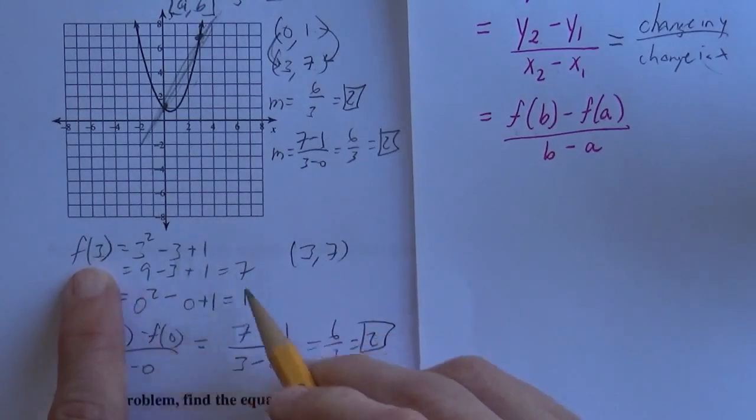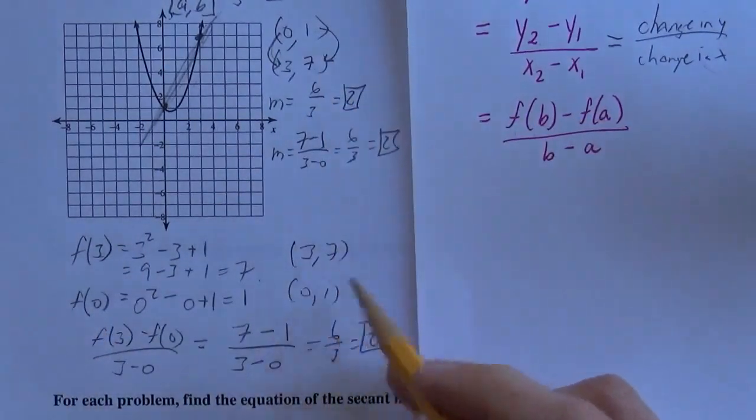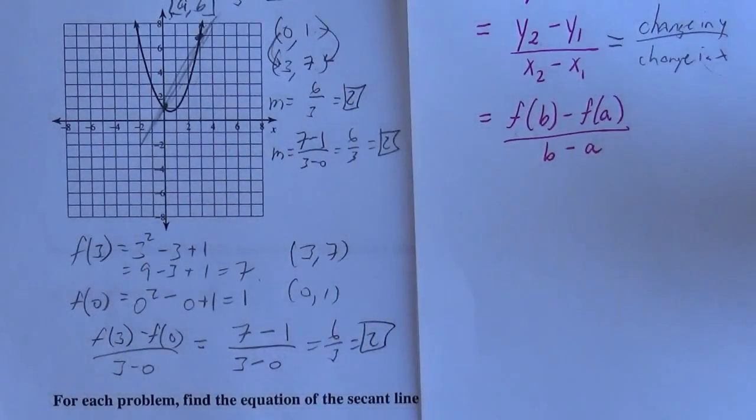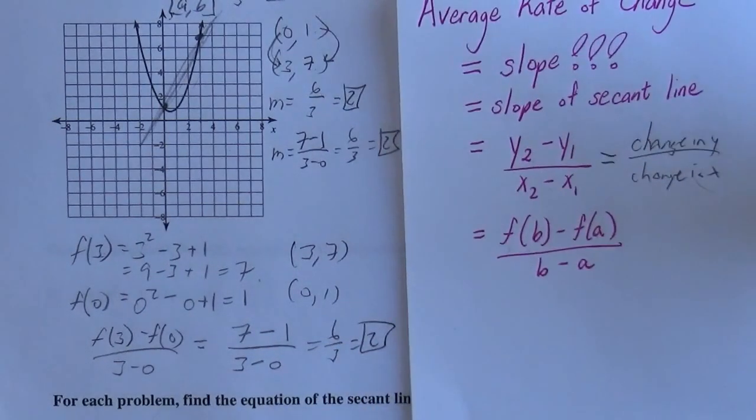When x is 3 the y value is 7, when x is 0 the y value is 1, finding the slope between those two points. That's all you're doing for these average rate of change, however you want to think about it.